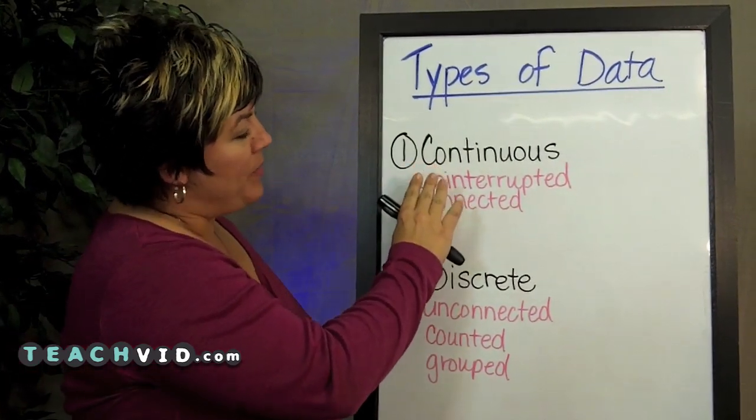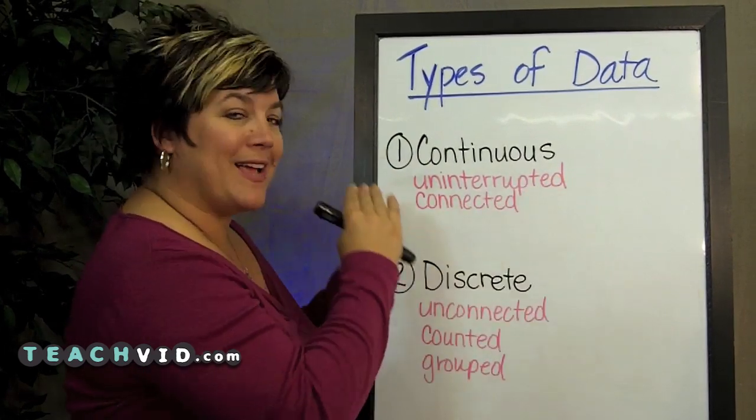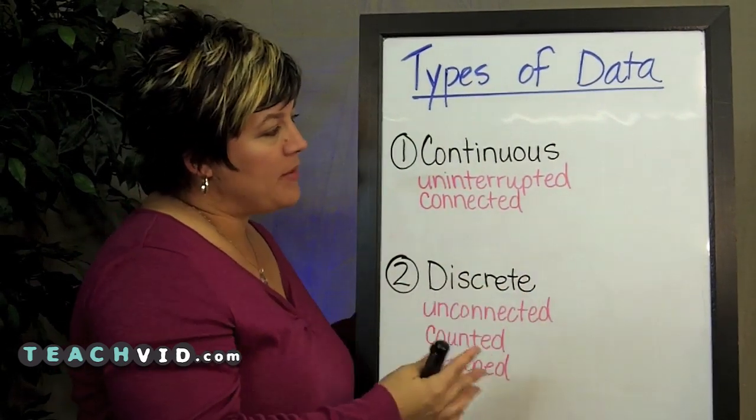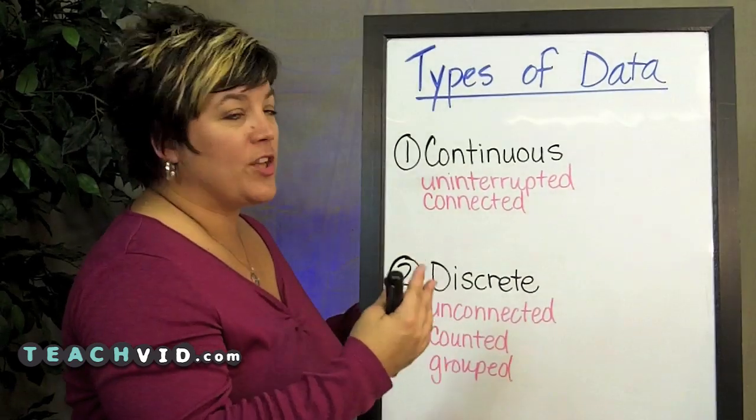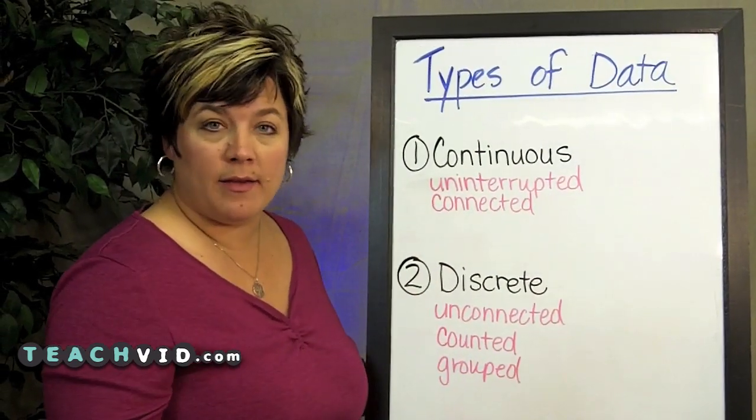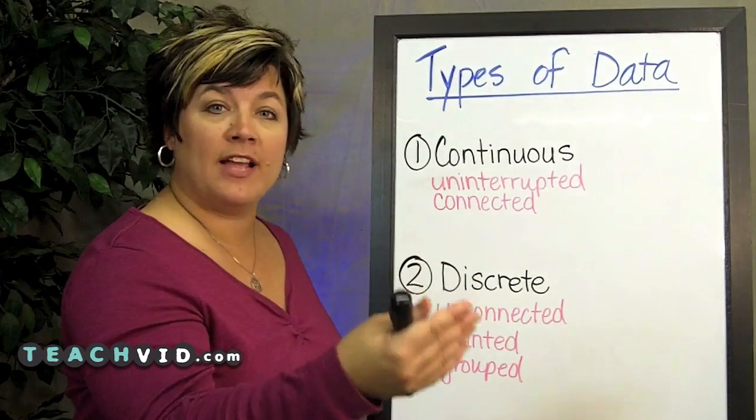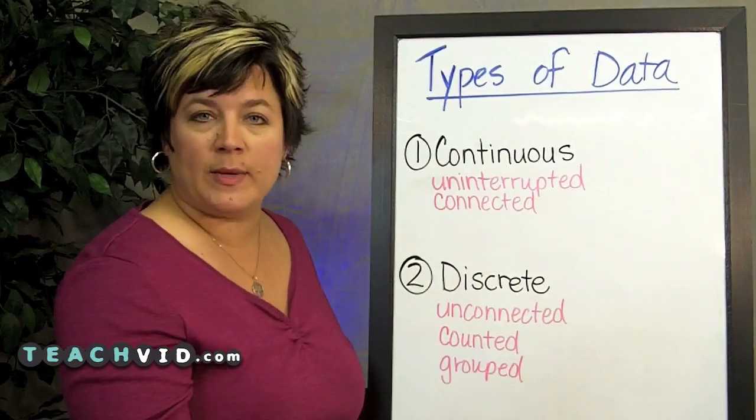Continuous data is characterized by being uninterrupted or connected data. An example of this might be if you were watching a plant grow for some science experiment that you have and you have to record the height of the plant and you're doing it over six weeks time.